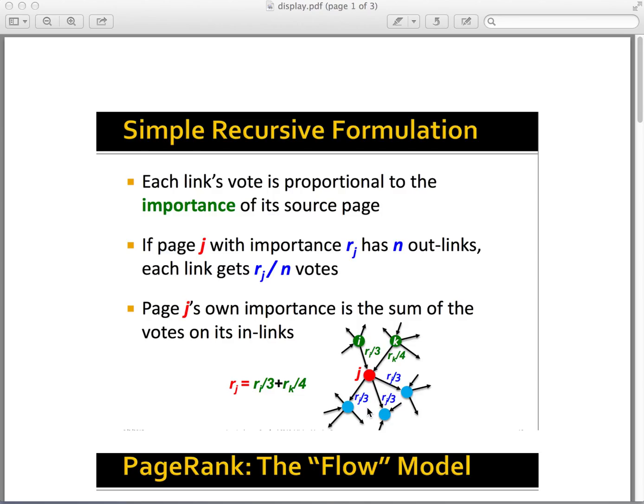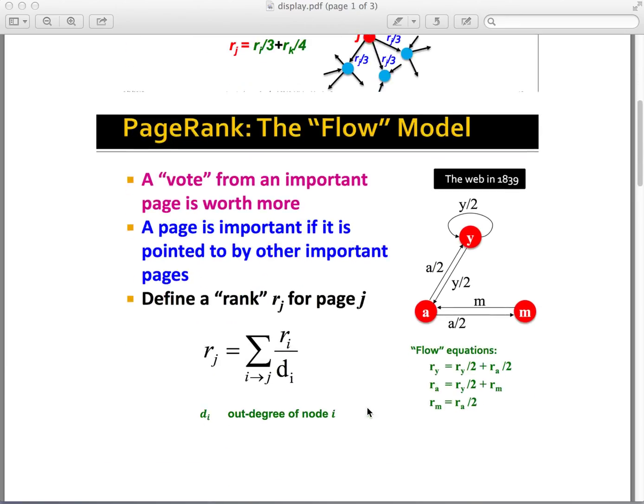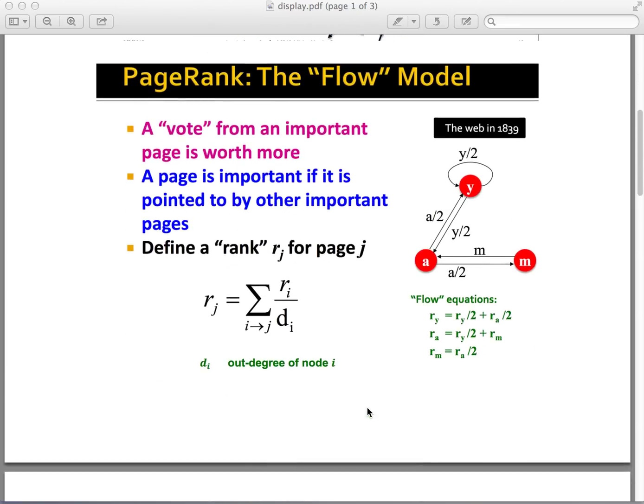In this graph, rj equals ri over 3 plus rk over 4. The idea of the model is that a vote from an important page is worth more.